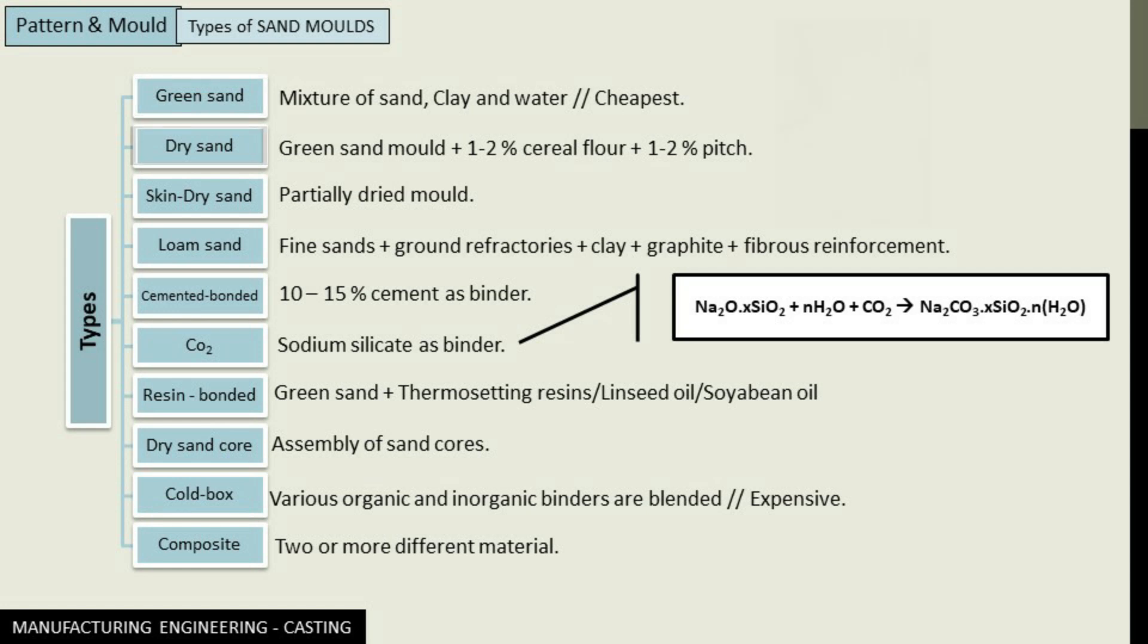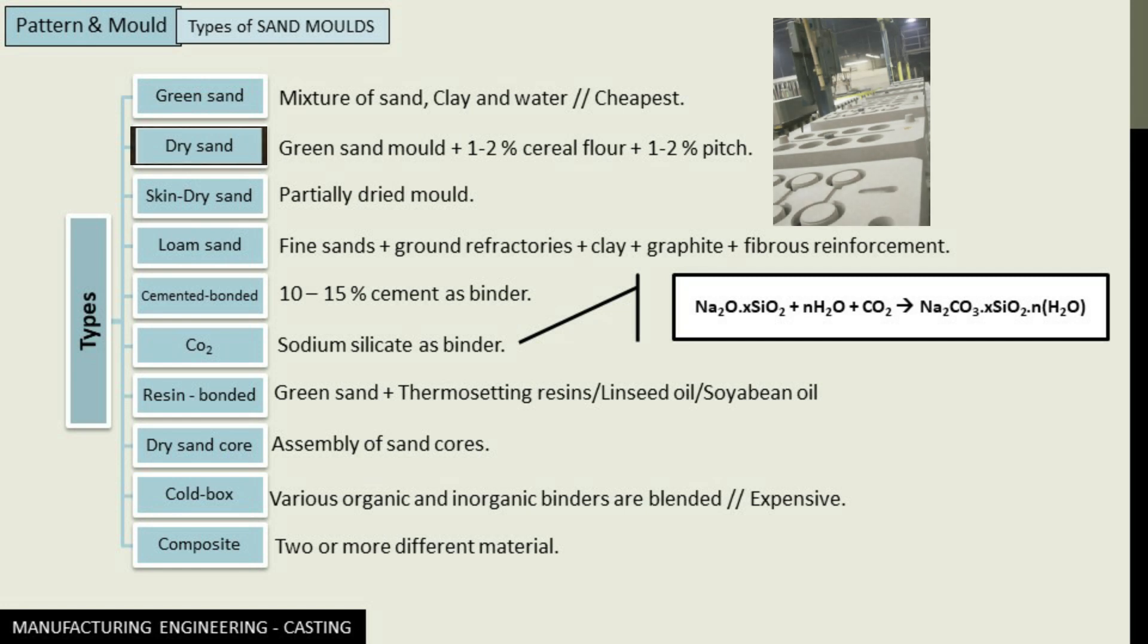Next we have the dry sand mold. The dry sand mold is actually a green sand mold heated. A green sand mold when heated, the water that it contains, the 6 to 8% composition of water it contains, evaporates and the remaining sand is what we call a dry sand mold.